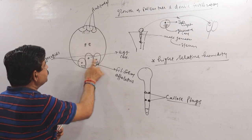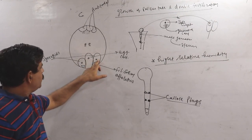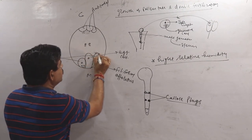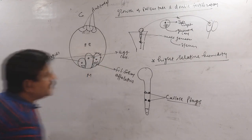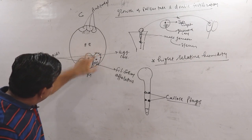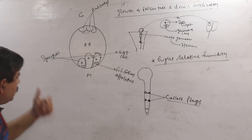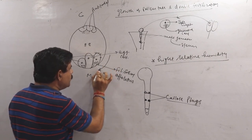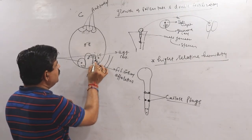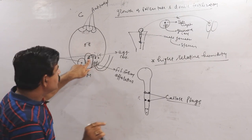There are two synergids. One of the two synergids starts degenerating, and the filiform apparatus of this degenerating synergid guides the entry of the pollen tube into the embryo sac. When the pollen tube enters and ruptures, one male gamete fuses with the egg nucleus and forms the zygote.